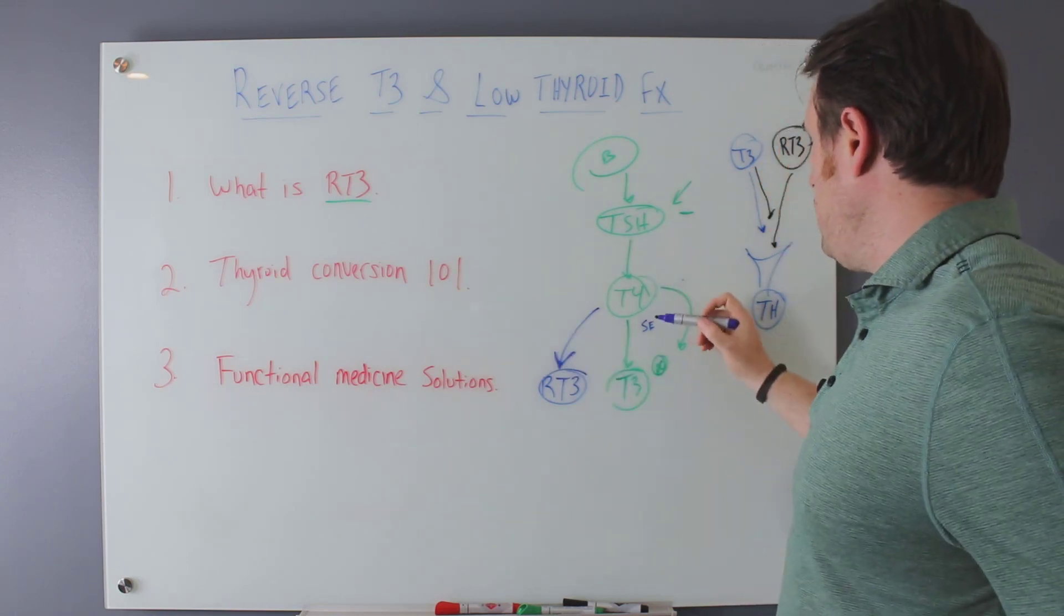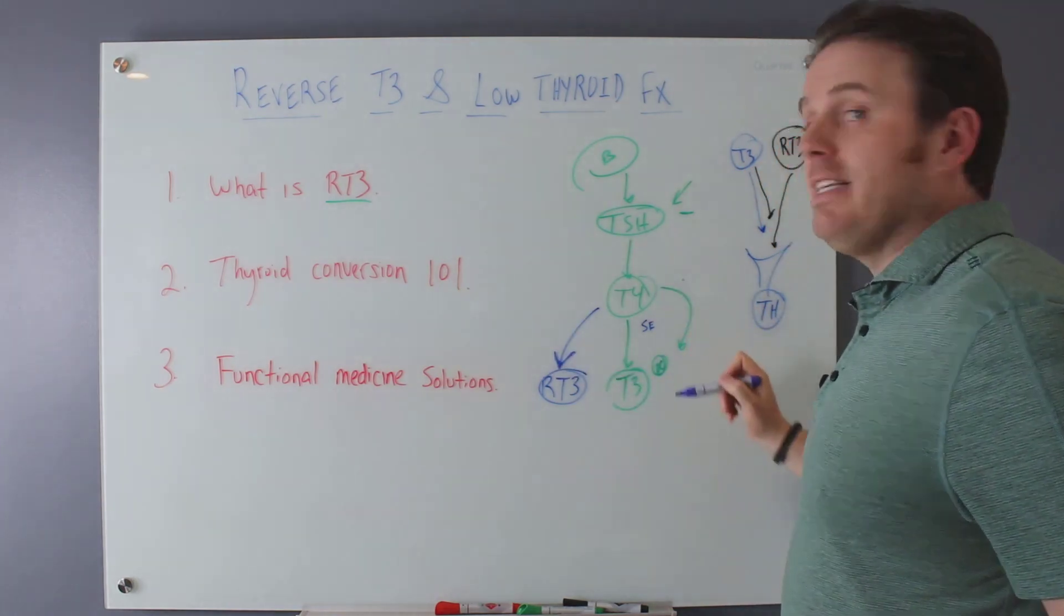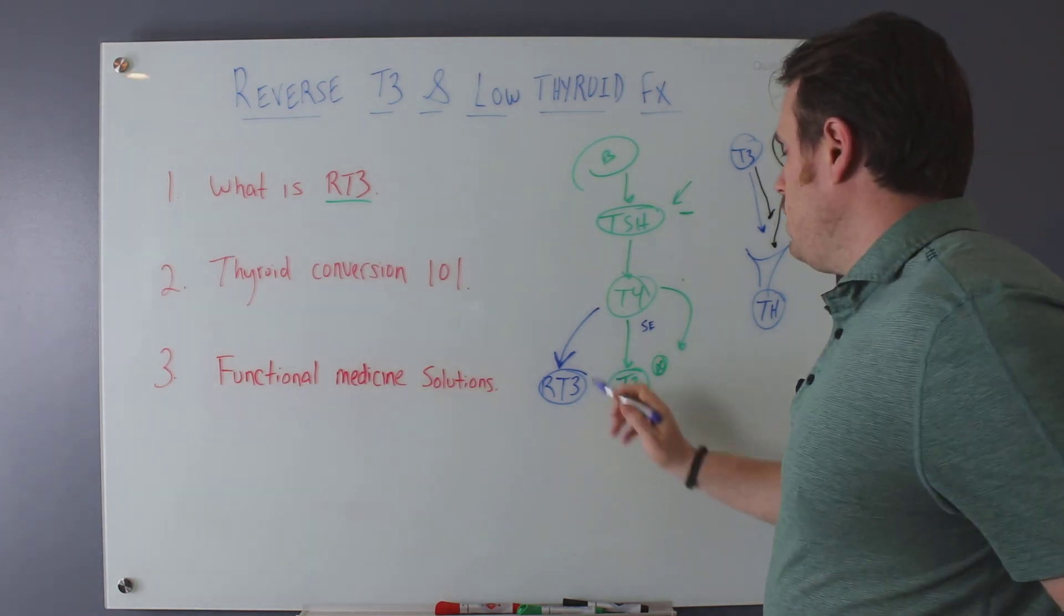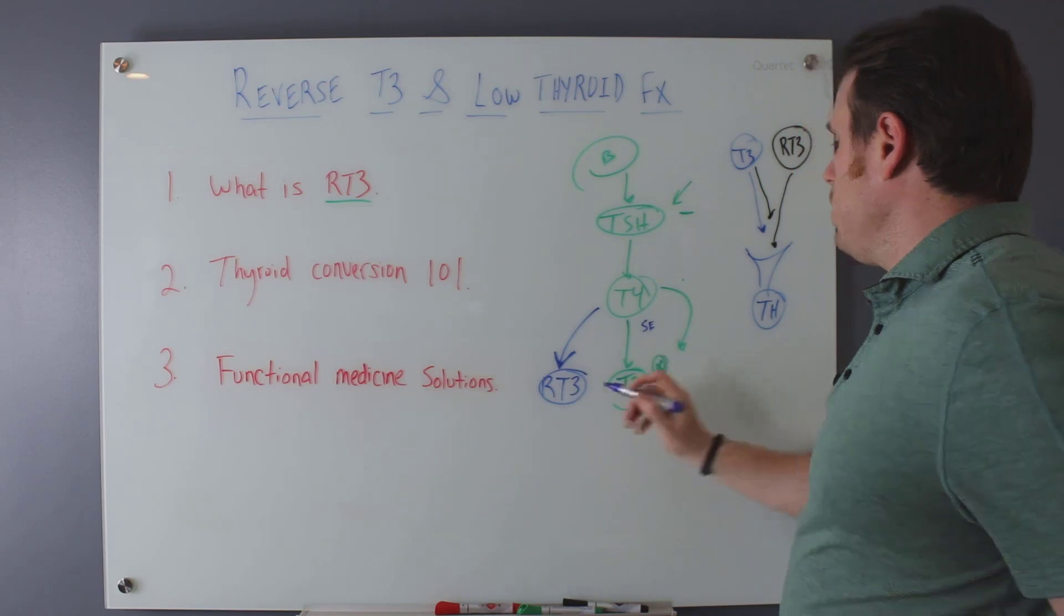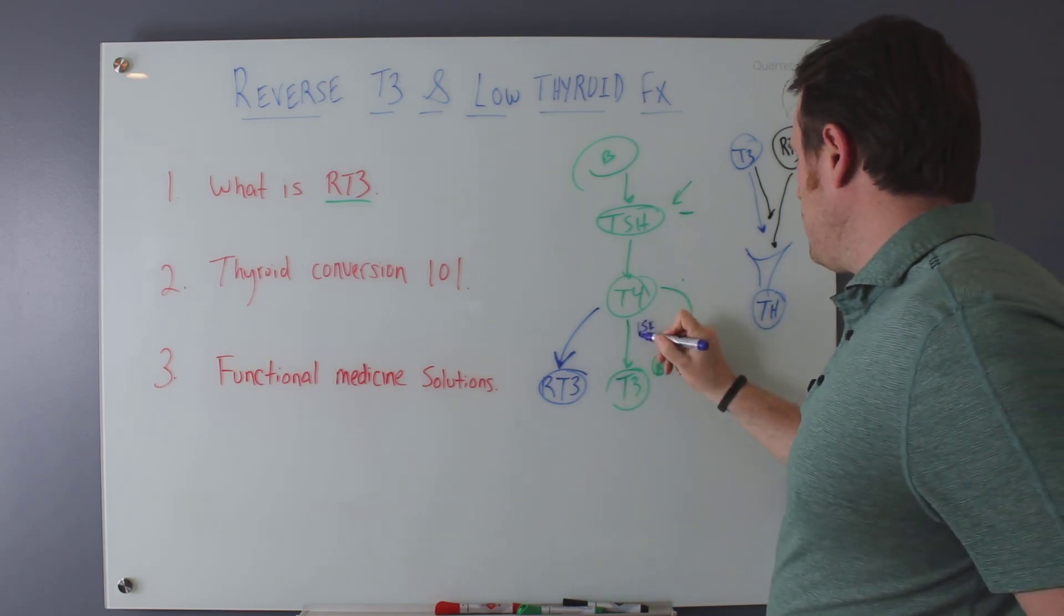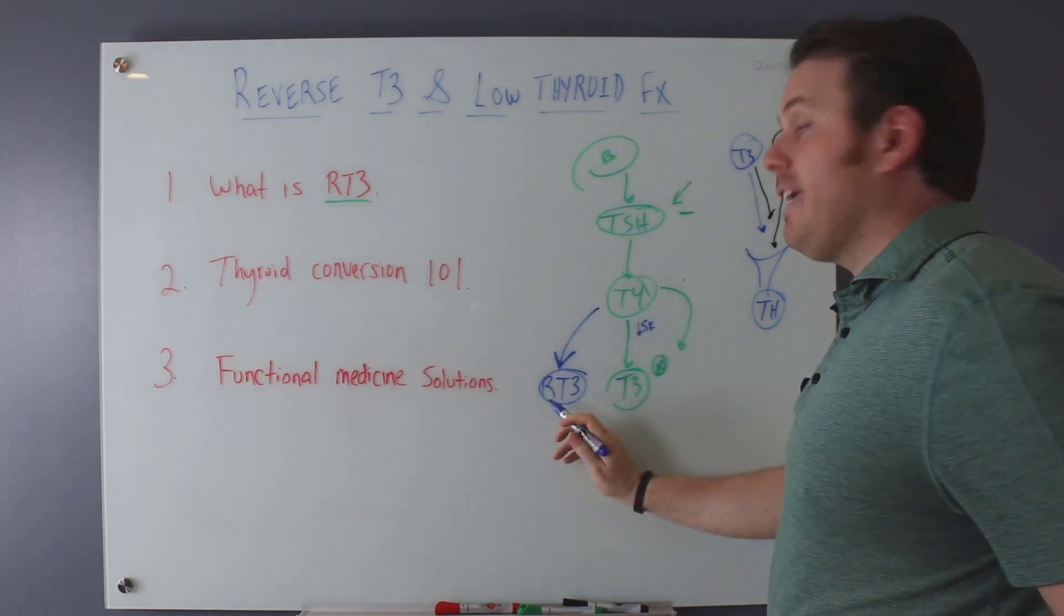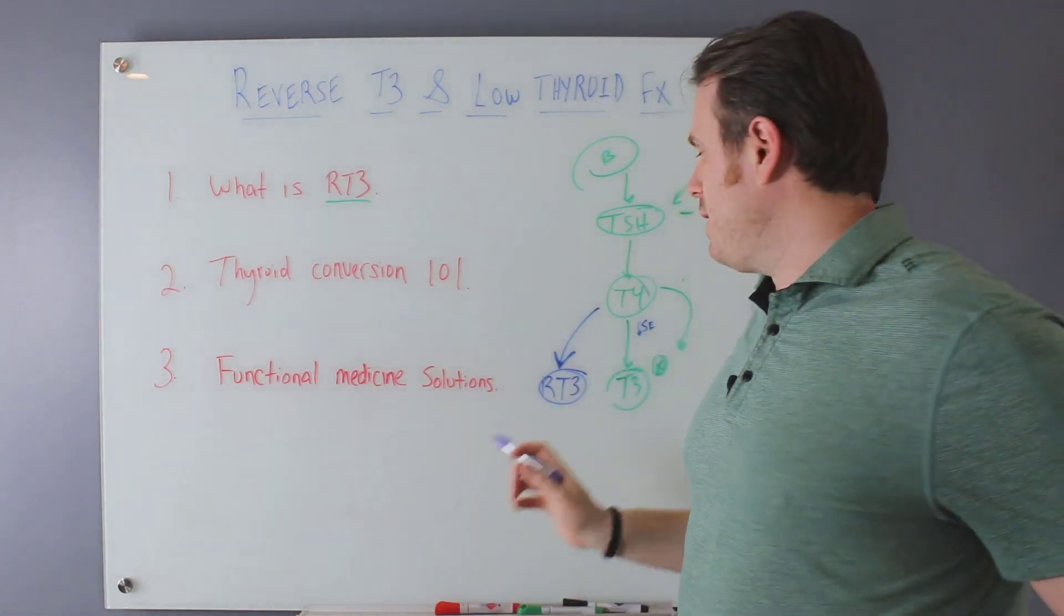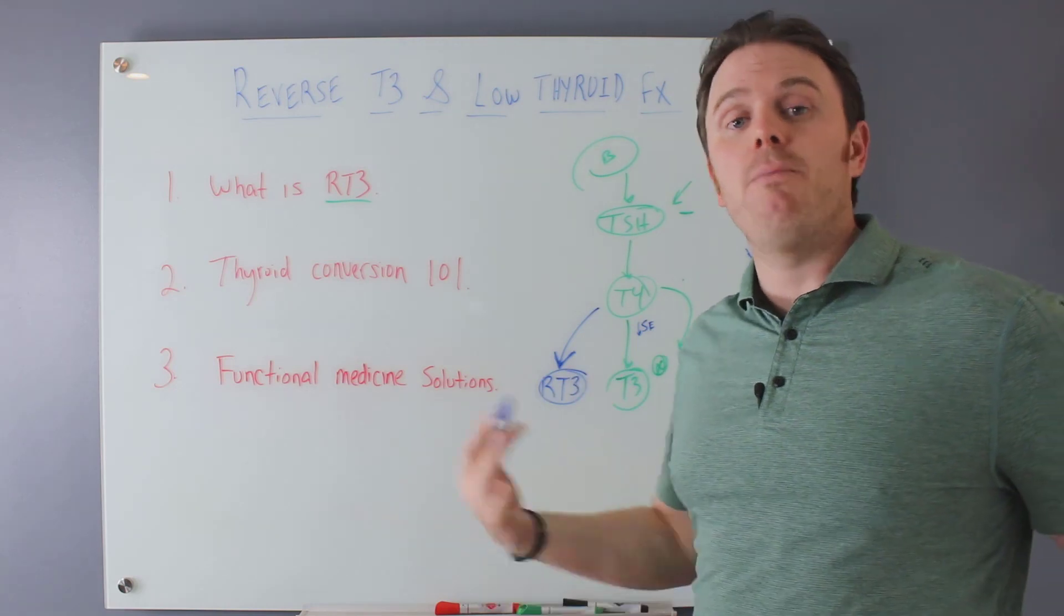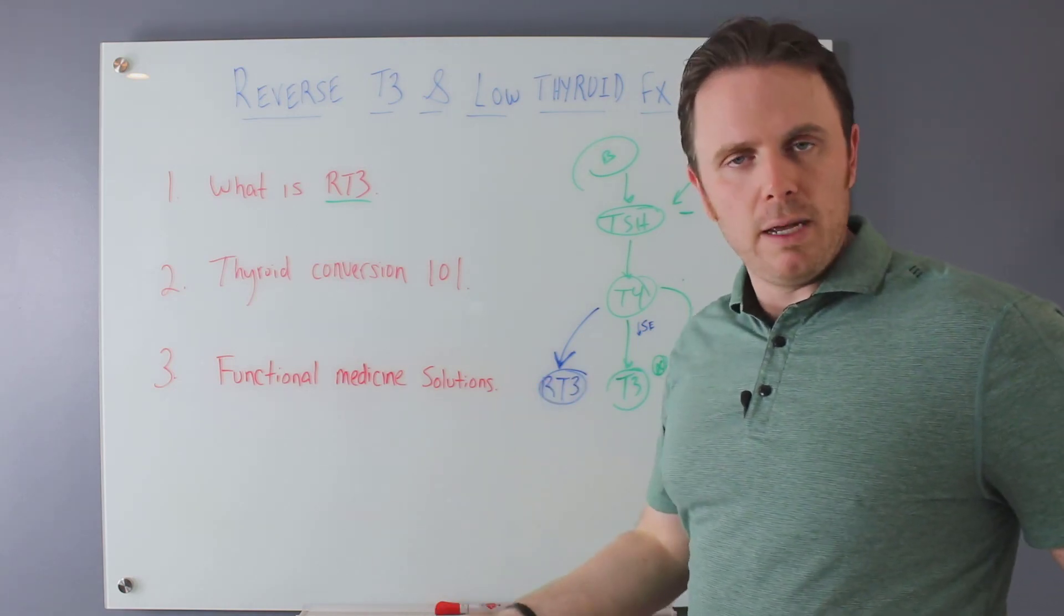So T4 to T3, this enzyme over here is a five deiodinase enzyme and reverse T3 is five prime deiodinase. And that can affect, well, low selenium can affect this conversion and can increase reverse T3.